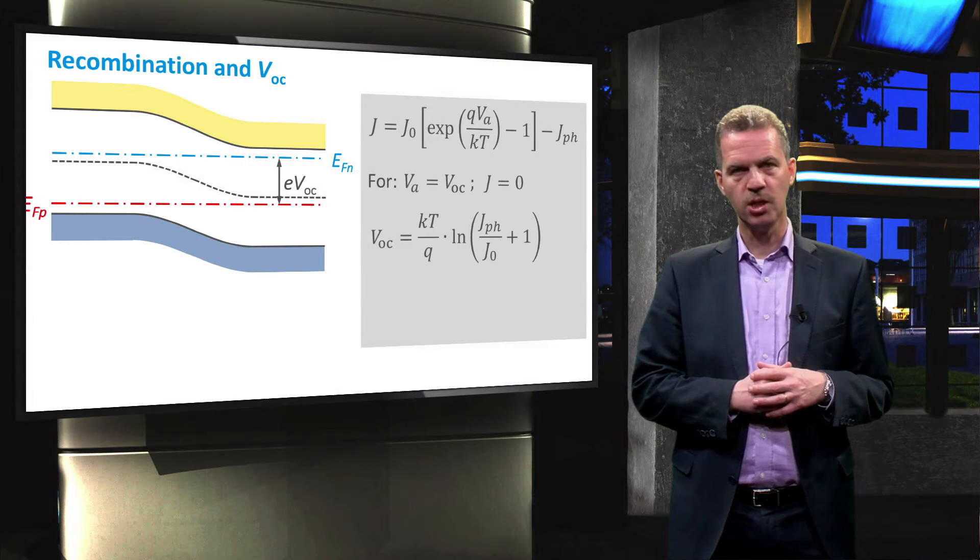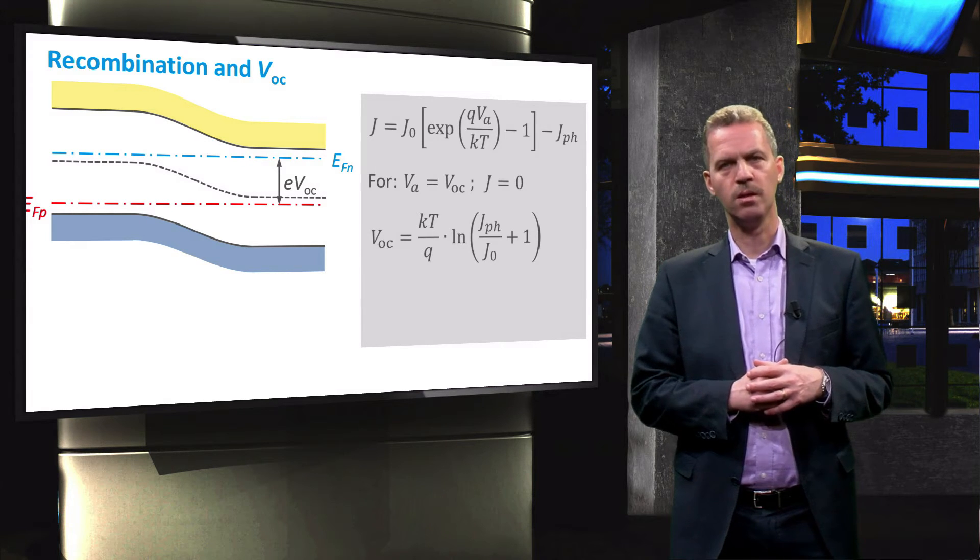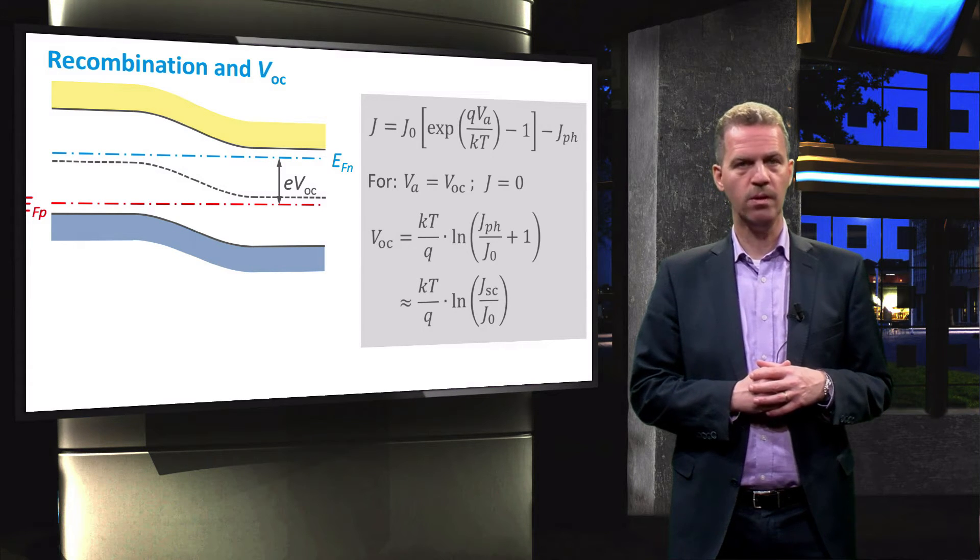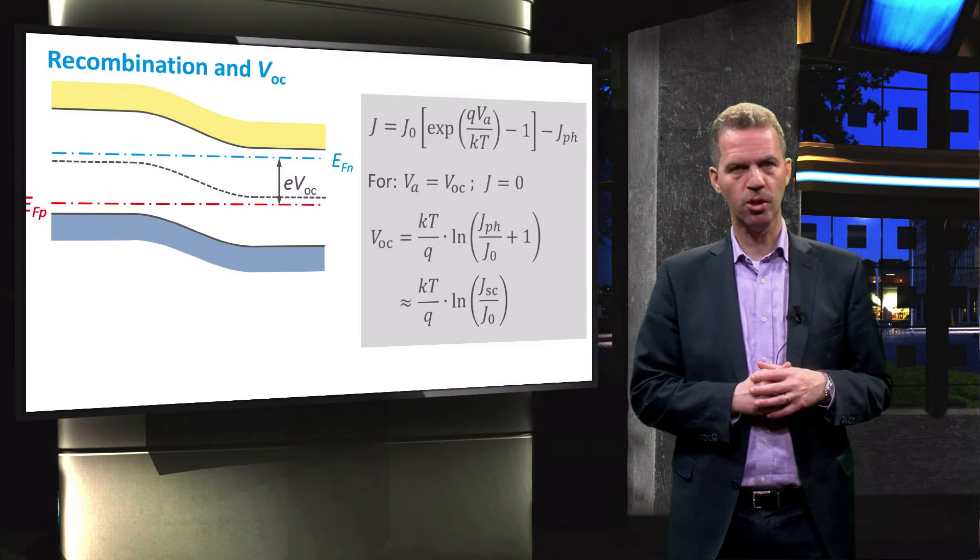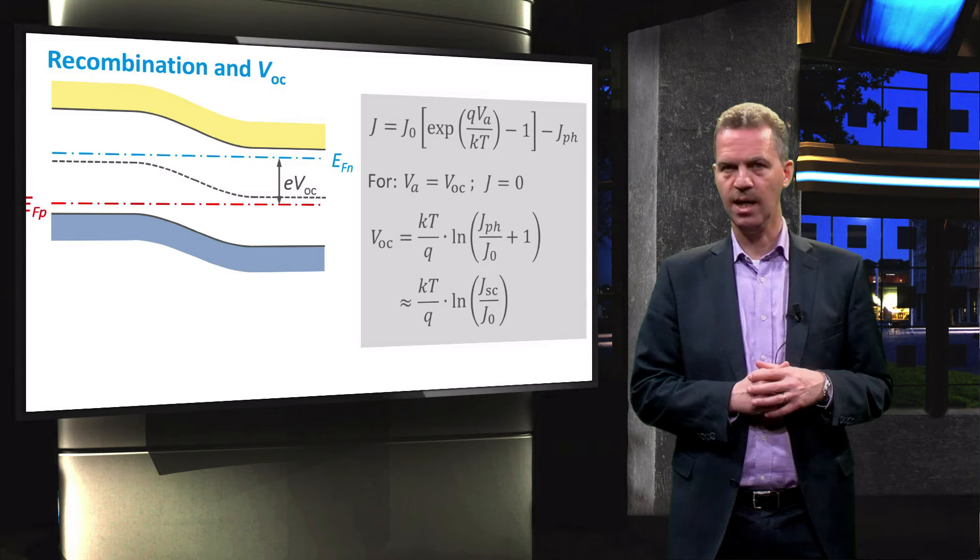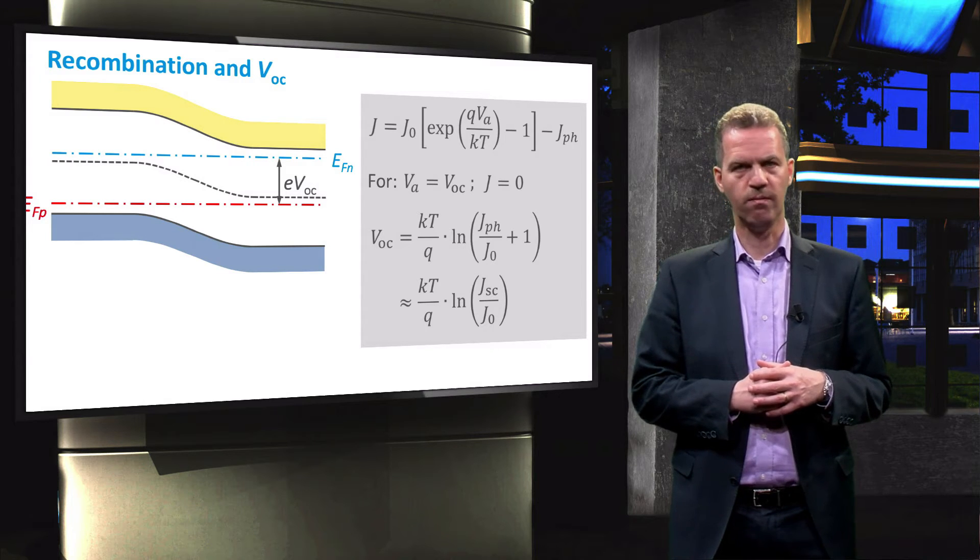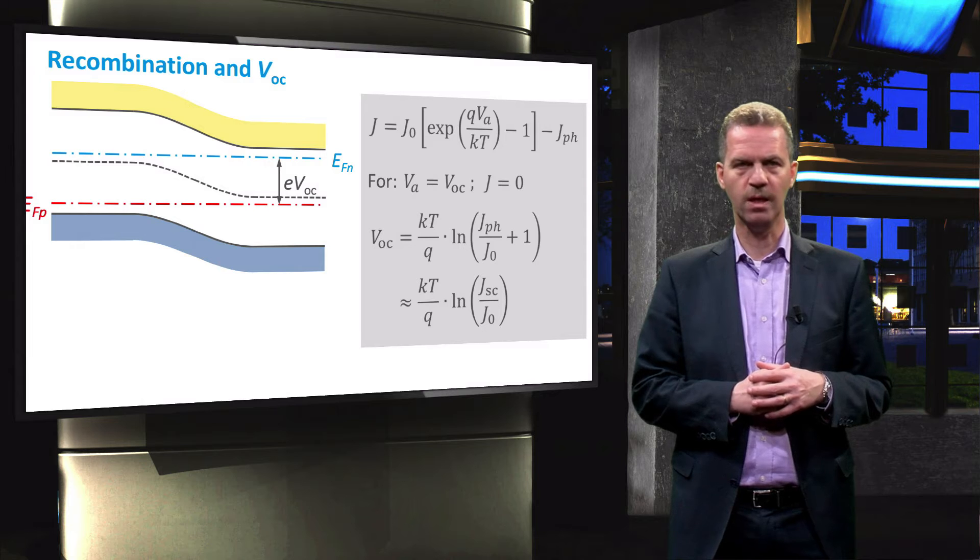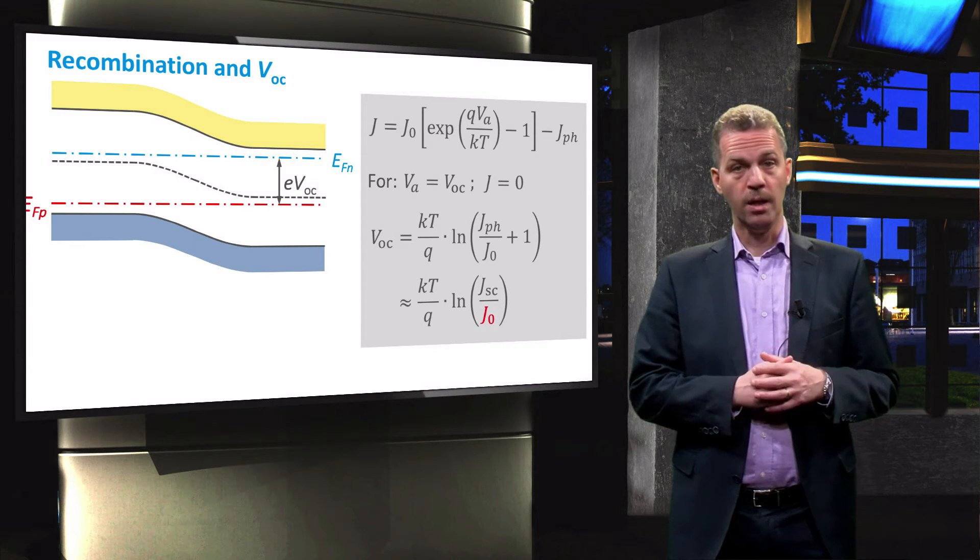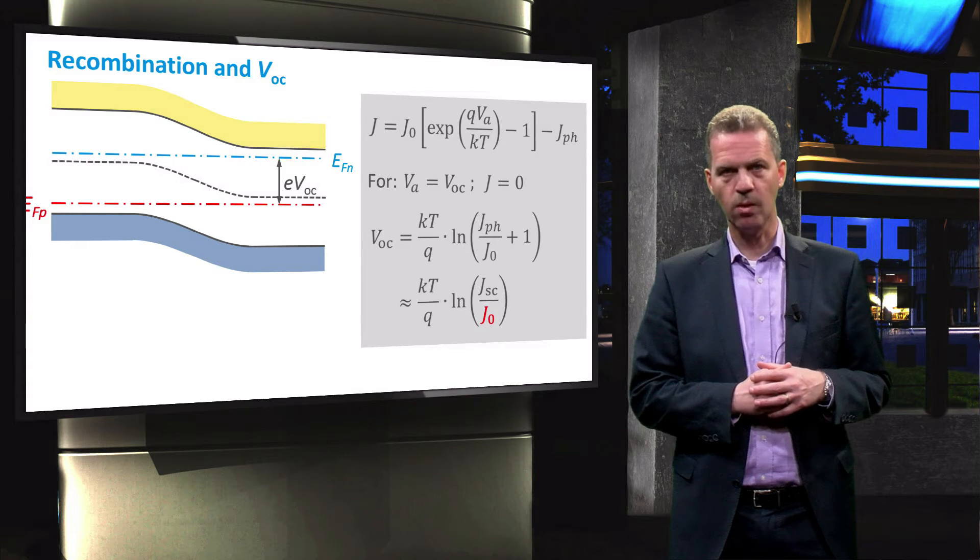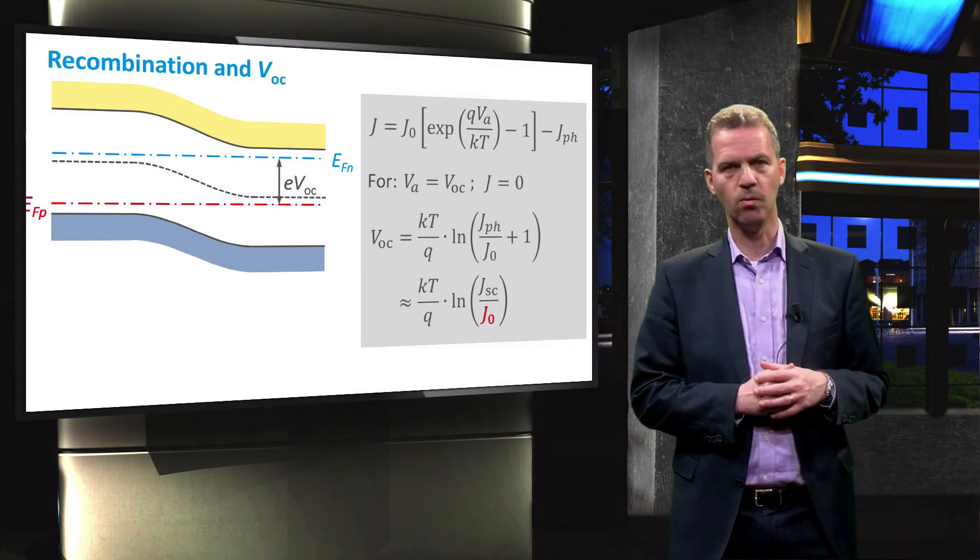In this equation, JPH is the photogenerated current density. This photogenerated current density is often approximated by the short-circuit current density JSC, and as JSC is much larger than J0, we find the following relationship for the VOC. The important conclusion is that the VOC is related to the saturation current density J0.